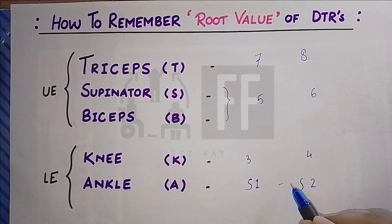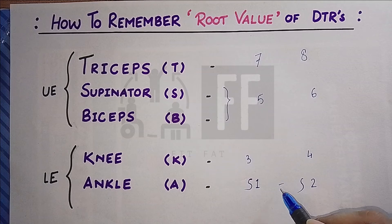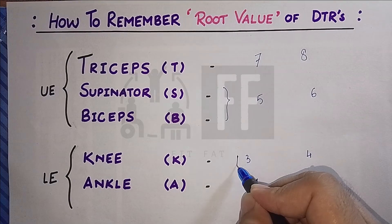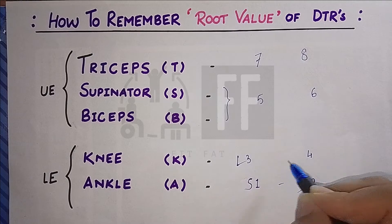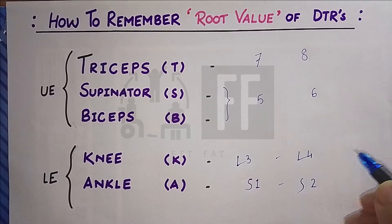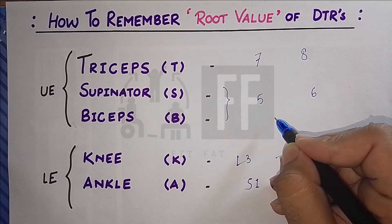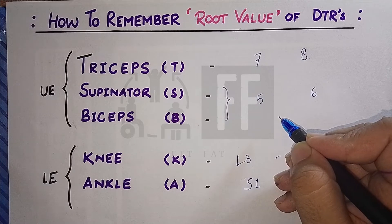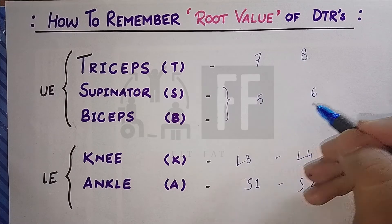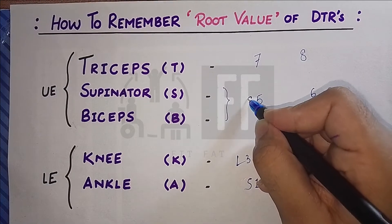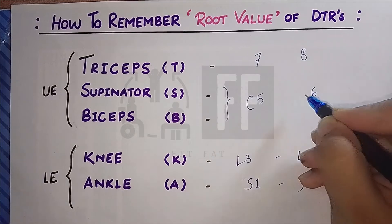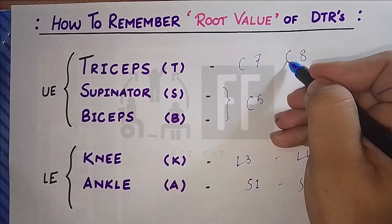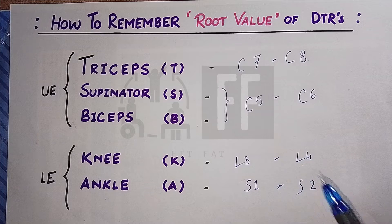The last spinal segment is sacrum, so we put S for the ankle. Then, going from caudal to cranial, after sacrum comes lumbar, so we put L for the knee. Next comes thoracic, but we all know the thoracic segment has no deep tendon reflex values, so we skip it. The next is cervical, so we put C for all of the upper extremities.